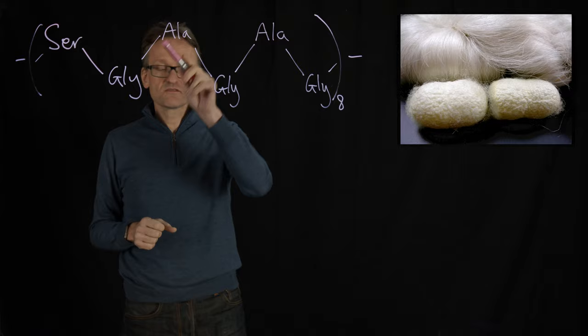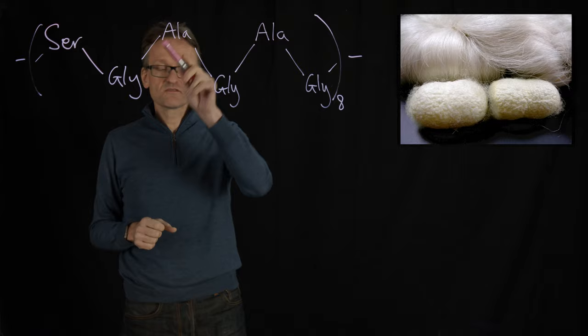We have alternating properties of alanine and glycine here. That is intimately related to this property of beta sheets being pleated.